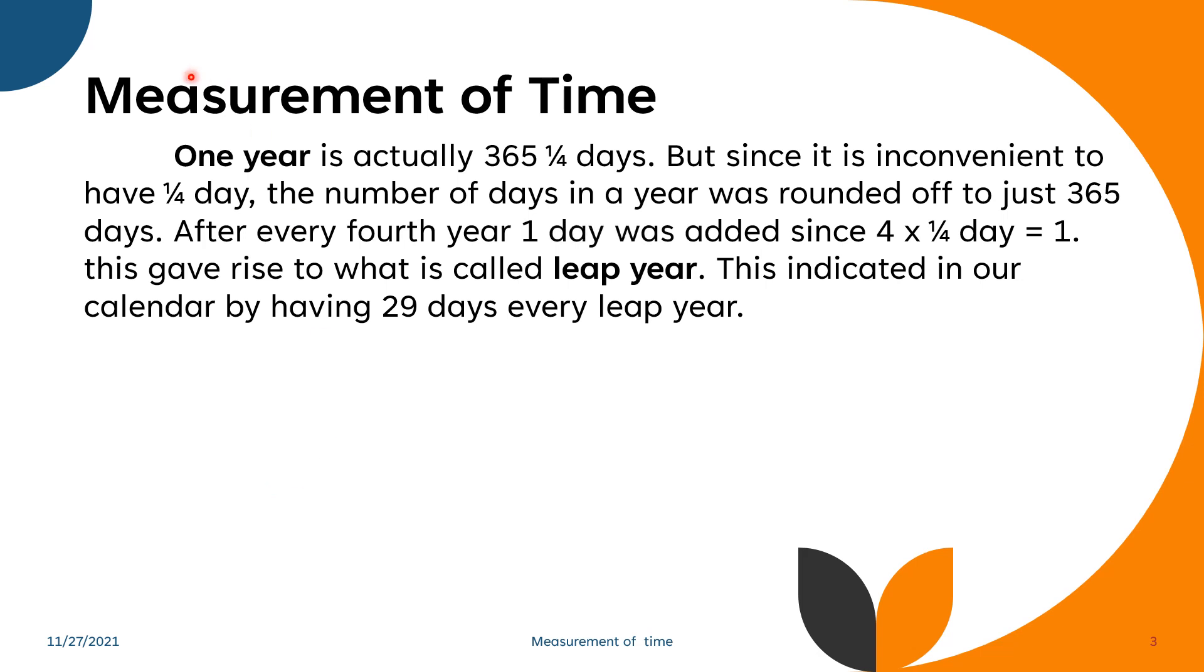One year is actually 365 and one-fourth days, but since it is inconvenient to have one-fourth day, the number of days in a year was rounded off to just 365 days. After every fourth year, one day was added since four times one-fourth days equals one. This gives rise to what is called leap year. This is indicated in our calendar by having 29 days every leap year.